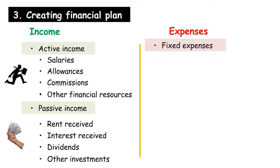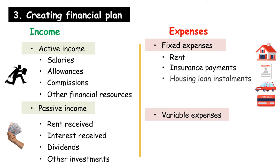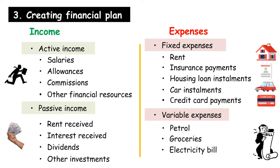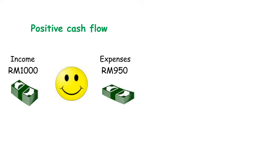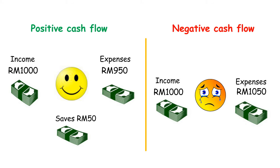Expenses consist of fixed expenses and variable expenses. Fixed expenses are expenses that must be paid, such as rent, insurance payments, housing loan installments, car installments, and credit card payments. Variable expenses will change every month according to our spending behavior — for example, petrol expenses, groceries, electricity bill payments, and water bill payments. Both of these expenses are cash outflows. A positive cash flow exists if total income exceeds total expenses; a negative cash flow exists if total income is less than total expenses.